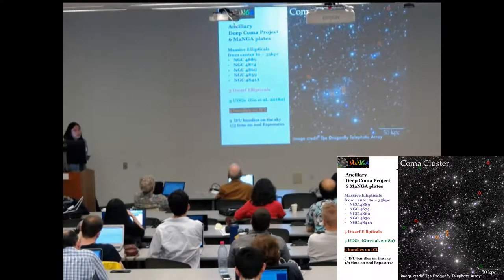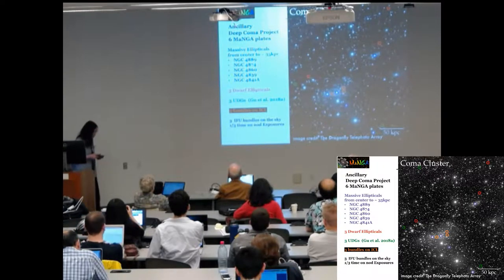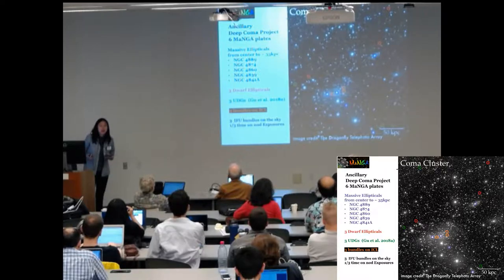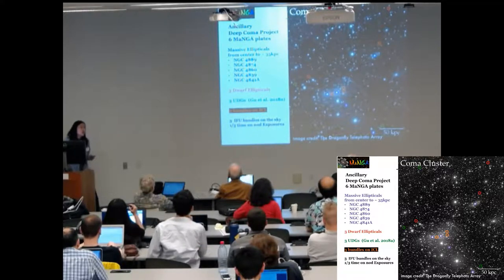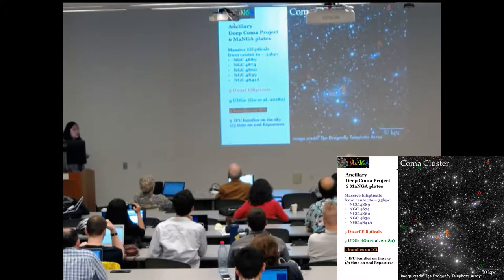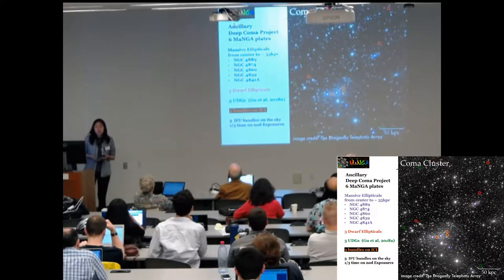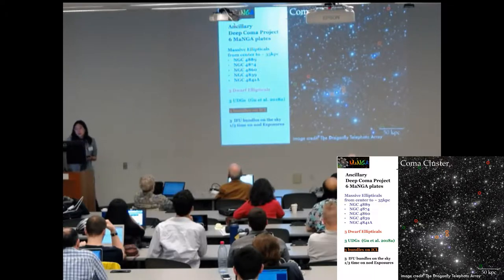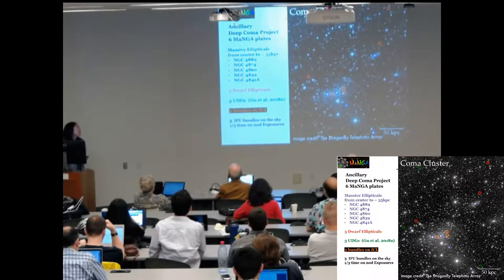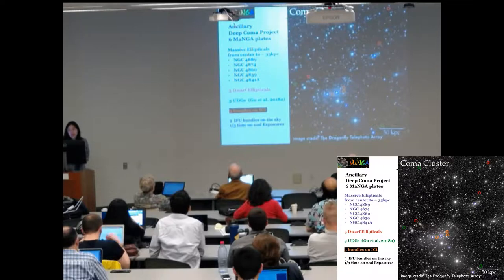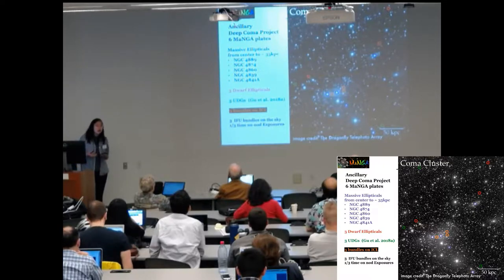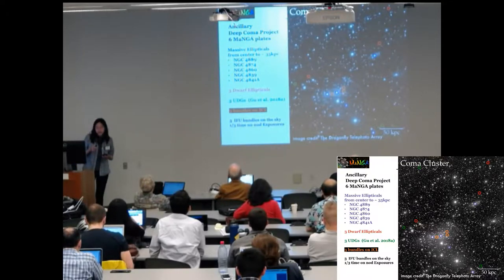And our data comes from one of the ancillary programs. We call it the Deep Coma program. There are different types of objects in our sample. There are massive early-type galaxies. There are dwarf ellipticals. There are three UDGs. And their population properties have been summarized into a paper earlier this year. And more importantly, we have three intracluster light bundles that locate between 100 to 200 kiloparsecs from the BCG center.